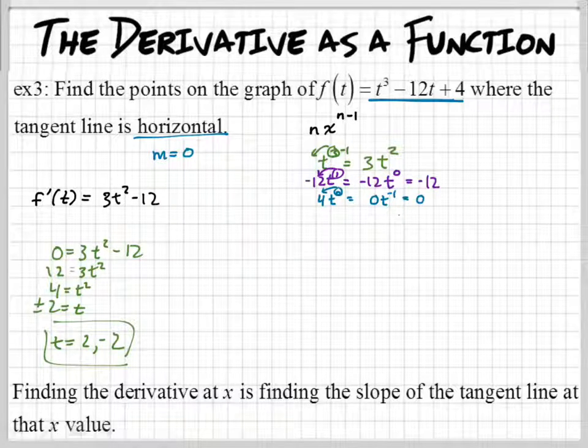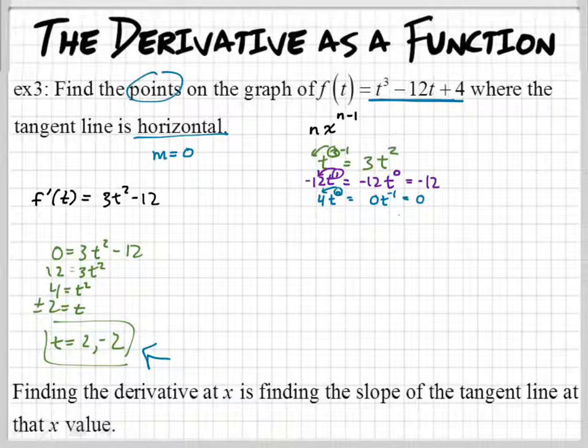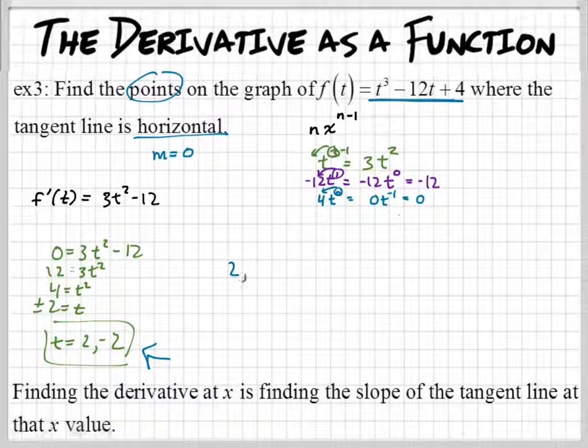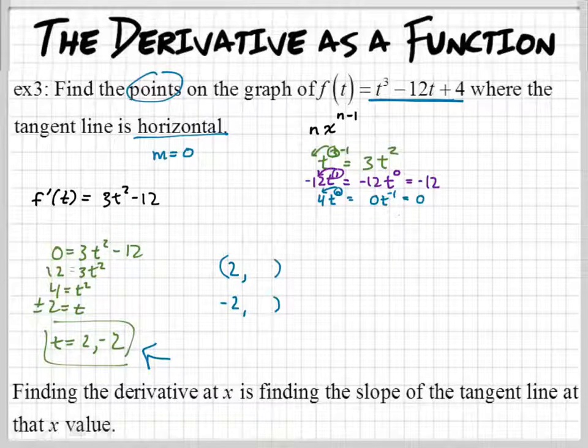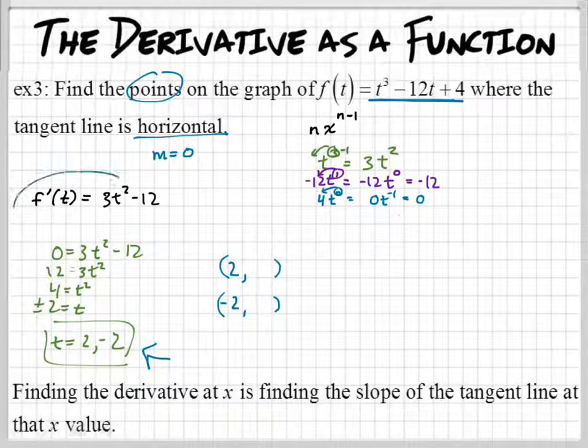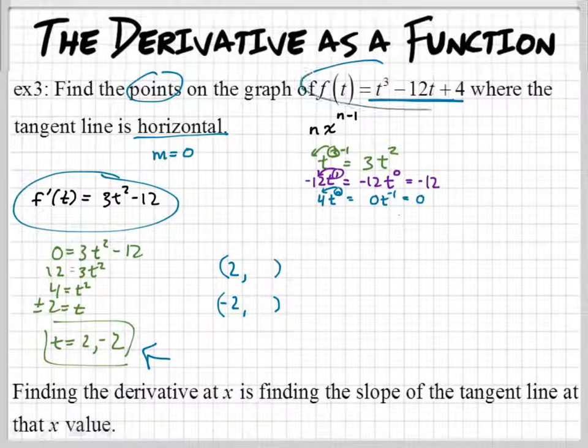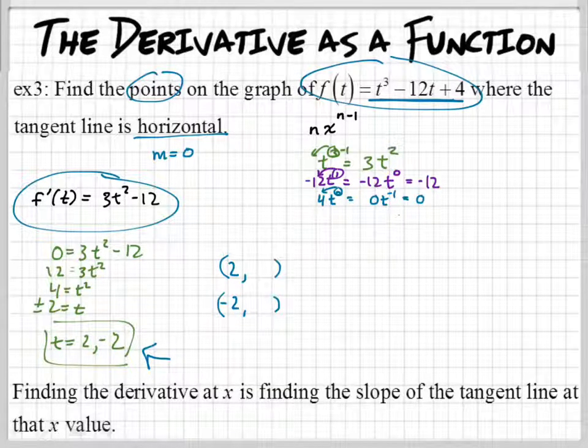So, because it says, I almost skipped this. Sorry. I circled that as my answer. But, because it says points, we technically should have an ordered pair. So, we have two points here. We have 2, comma something, and then negative 2, comma something. How do I find those y's? Plug it into what, though? Do I plug it into the f prime or the original? Yeah, the original. Can you guys tell me what they are?